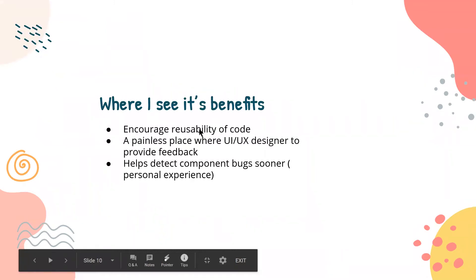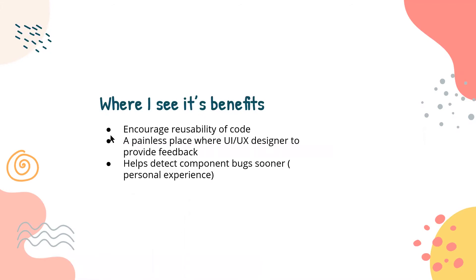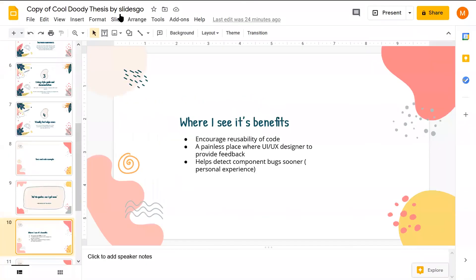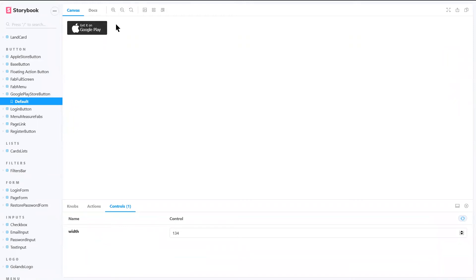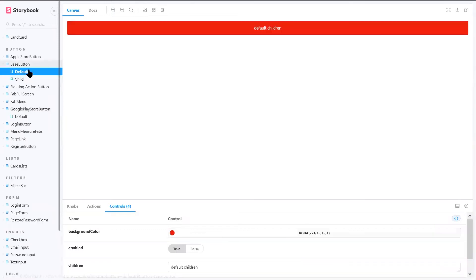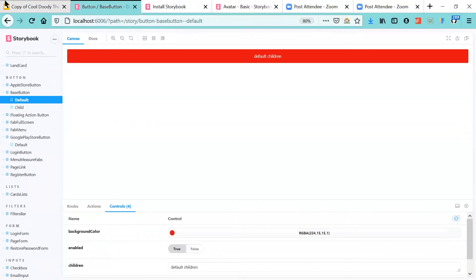It encourages reusability of code. Sometimes we have smaller components — like a container that centers your content — that you might not know exist without Storybook and end up rewriting. Storybook encouraged me to reuse what's there, or modify it to be more flexible rather than creating something new. That was true for one component where I just added some extra style to the existing base component, saving me lines of code.